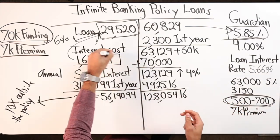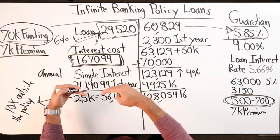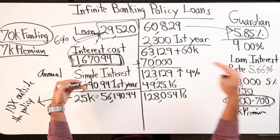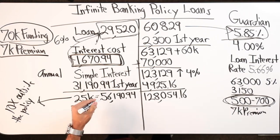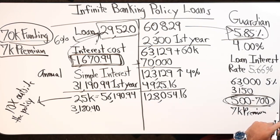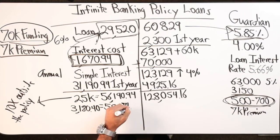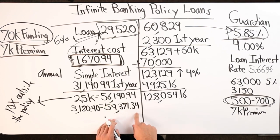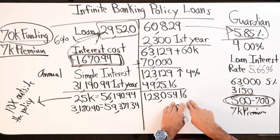It's going to be a new interest rate since I never paid this in this example. If I don't pay this, then next year I get charged interest on that same interest, so the number is going to get larger. Now I'm at $3,180.40 in new interest. So $56,190.94 plus $3,180.40 - now I'm at $59,371.34 in outstanding policy loans.